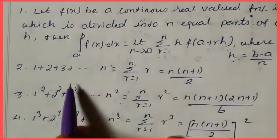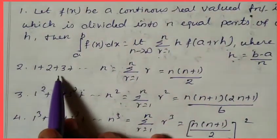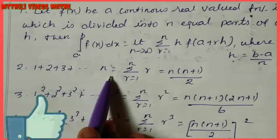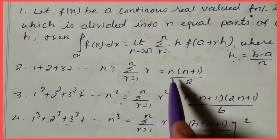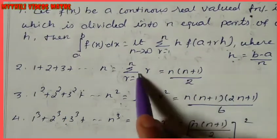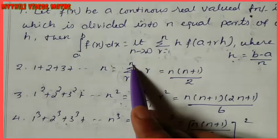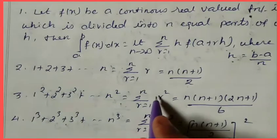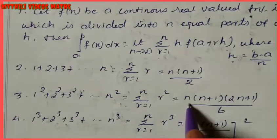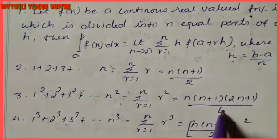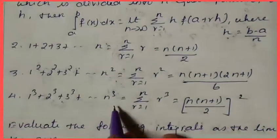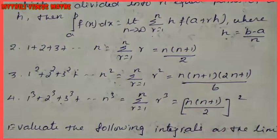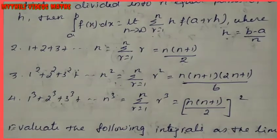One more formula — you may have studied this in 10th grade. That is the summation of natural numbers: 1 plus 2 plus 3, up to n. The formula is n(n+1) divided by 2. Summation of r equal to 1 to n of r equals n(n+1)/2. The square formula: summation of r squared equals n(n+1)(2n+1) divided by 6. And the cube formula: summation of r cubed equals [n(n+1)/2] whole squared. Using these three formulas, we will solve these sums.